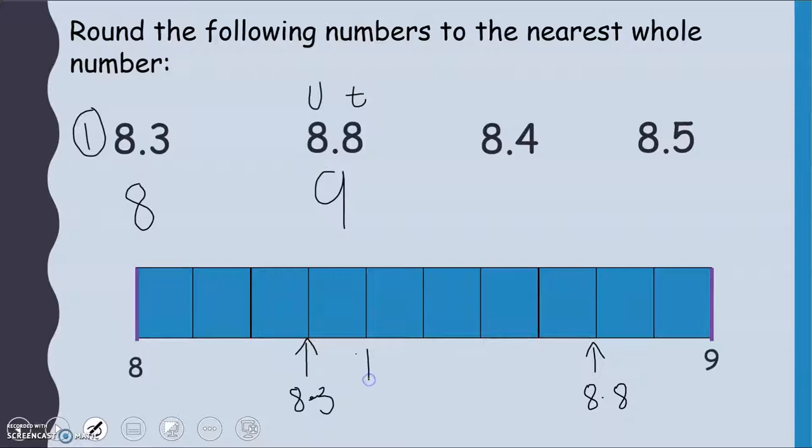8.4 then is at this box here, and it's much closer to 8 than it is to 9, so that is going to be 8. And then 8.5, that one's right in the middle but we always say that we round up when it's a 5. So 5 is telling me to round that 8 up to a 9.